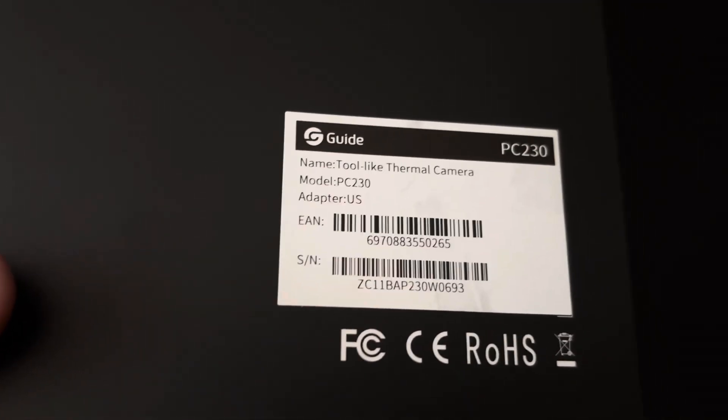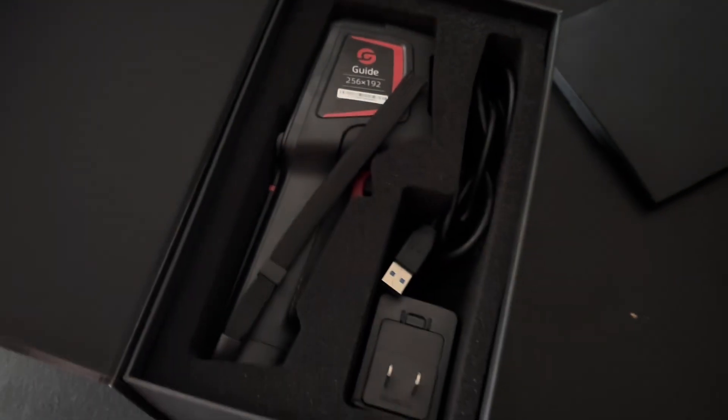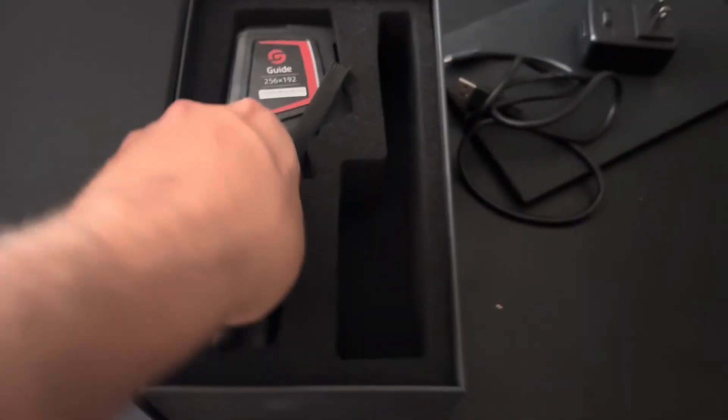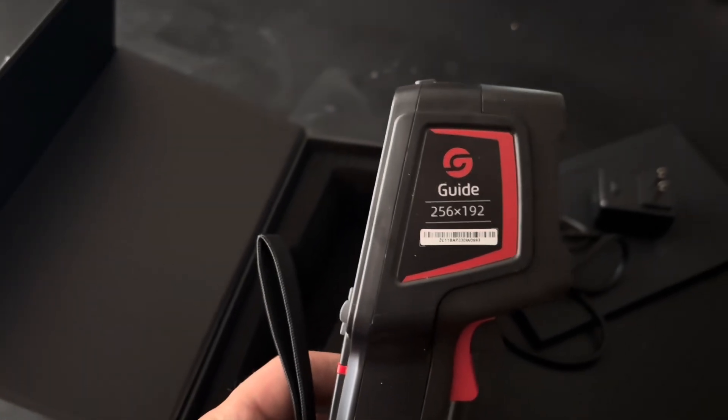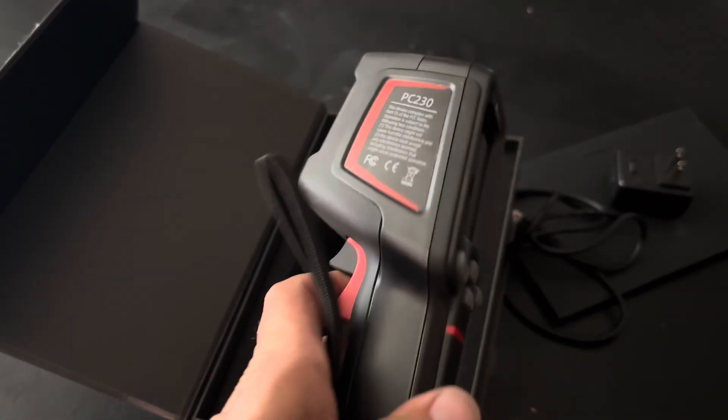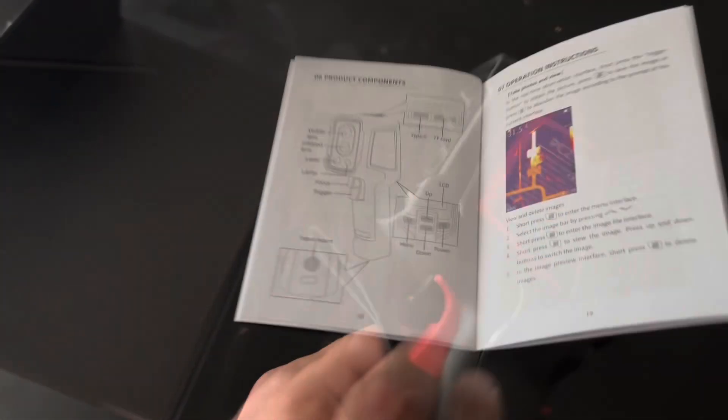On the back here you can see the EAN number and each device has its own serial number. Opening it up, these are the instruction manuals. In the box we get a charging cable, a wall adapter, and then the actual device. It's always a good idea to charge it fully before you use it.